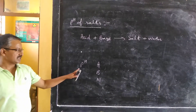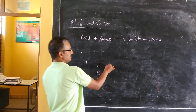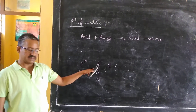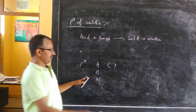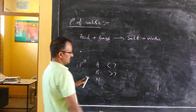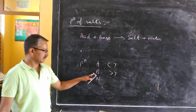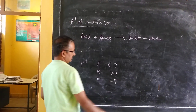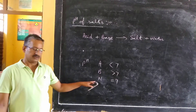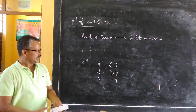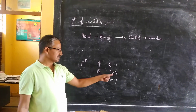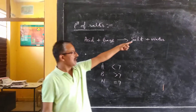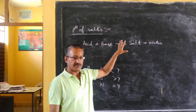If pH value comes out to be less than 7, then it is said to be acidic. If it is more than 7, then it is said to be basic. And if it is equal to 7, then it is said to be neutral. So, do these pH values also apply to salts? This is the topic.